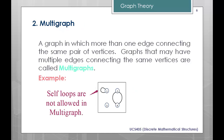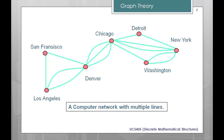The second type is multigraph. Multigraph means more than one edge connecting the same pair of vertices. Here vertices 1, 2, 3, and 4 are given. Vertices 2 and 4 are connected by two edges, so there are multiple edges — that's why we call it a multigraph. For example, between Los Angeles and Denver there are multiple edges, so this is a multigraph representing a computer network with multiple lines between different cities.